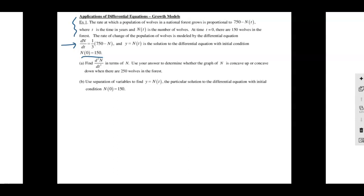Part A says find d squared n over dt squared — that just means find n double prime, find the second derivative — in terms of n. Remember, dn/dt is the same thing as n prime. It gives me the first derivative, and this first part wants us to find the second derivative. To get from the first derivative to the second derivative, we're going to take the derivative. We're going to find the second derivative in terms of n, and then use that answer to determine whether n is concave up or concave down when n equals 250.